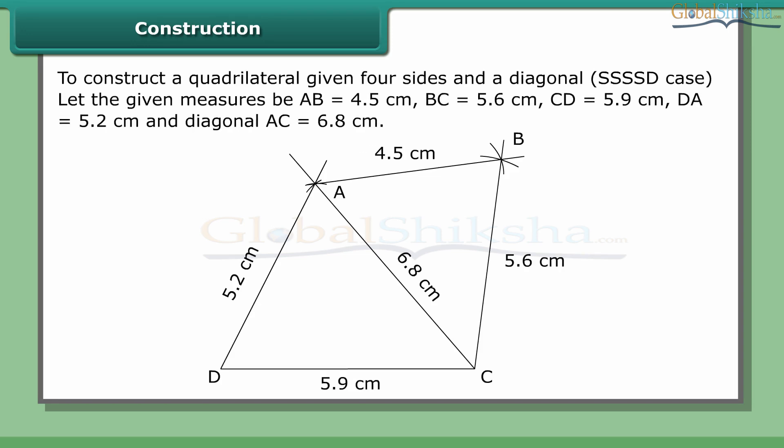To construct a quadrilateral given four sides and a diagonal — the SSSSD case. Let the given measures be AB = 4.5 cm, BC = 5.6 cm, CD = 5.9 cm, DA = 5.2 cm, and diagonal AC = 6.8 cm.